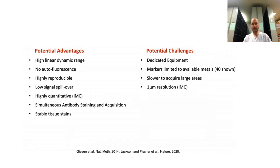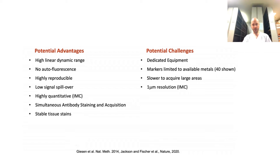Advantages of imaging mass cytometry include an impressive dynamic range because we use primary conjugates and don't use secondary antibodies or enzymatic amplification. This results in no signal saturation, which can be a problem with immunohistochemistry or immunofluorescence. Since the lanthanide metals are not present in biological samples, what we measure is not endogenous, meaning autofluorescence is not a problem. The staining is highly reproducible and there is low spillover between channels, making it easy to use many markers simultaneously with less complicated corrections if needed.